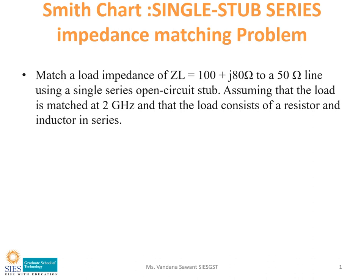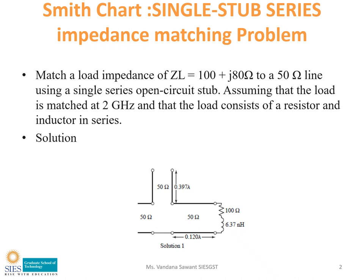Note down two things: we need to design a single series stub and the stub is open circuited. First, based on this, we need to draw a prototype of the design. Here is the load ZL and this is the stub. This stub is connected in series with the load and it is open circuited. We need to find out the distance of the stub from the load as well as the length of the stub with the help of a Smith chart.